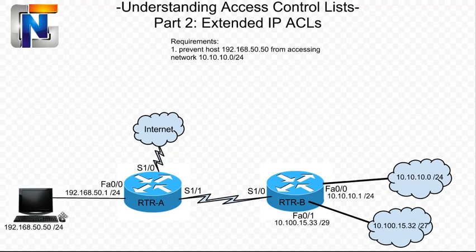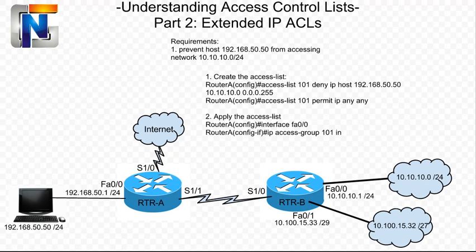Requirement number one: prevent host 192.168.50.50 from accessing network 10.10.10.0. In order to meet this requirement, we will first need to create an access list and think about which router we will be using. Since all extended IP ACLs are applied closest to the source, we need to look at our source traffic. The source traffic is coming from host 192.168.50.50. Closest to the source will be Router A, and the closest interface will be FA0/0. So that's where we'll be applying it.